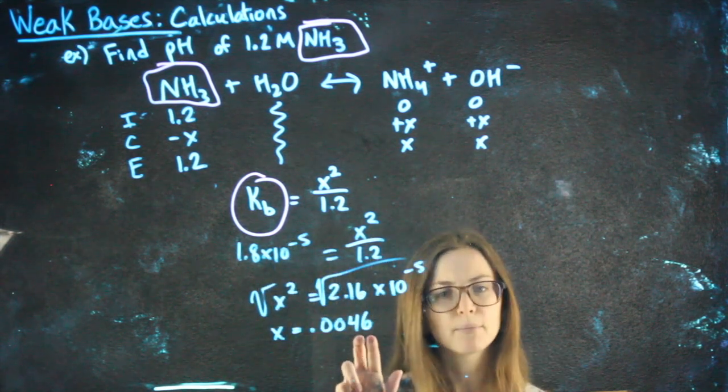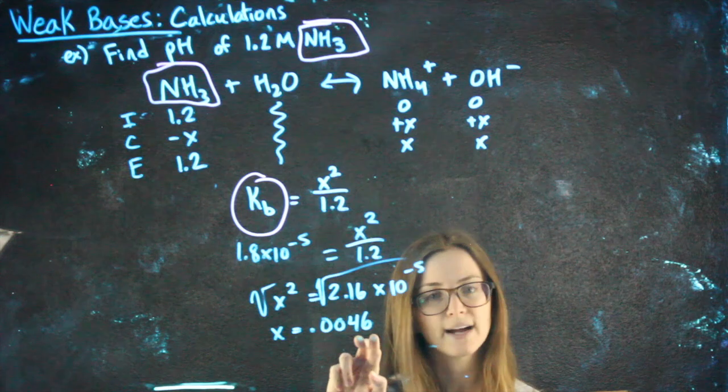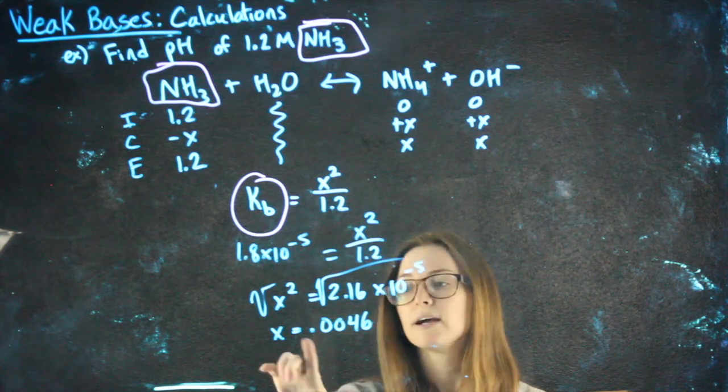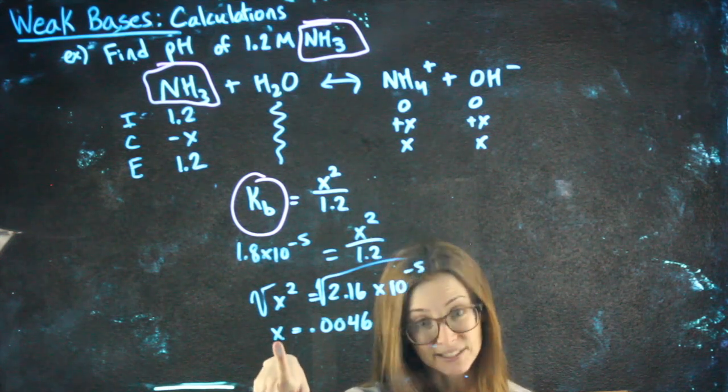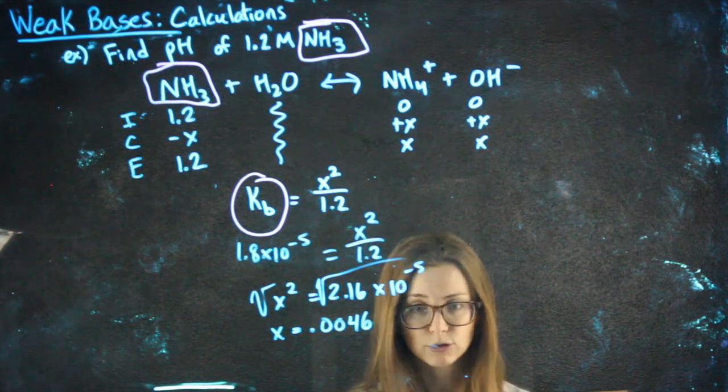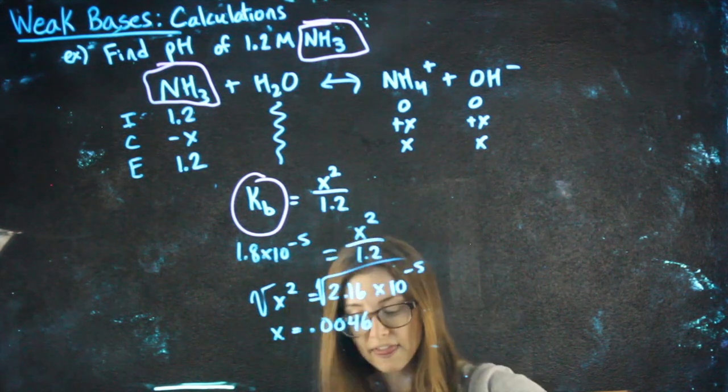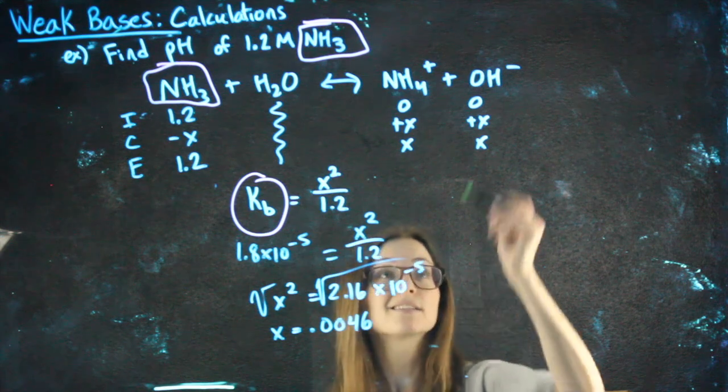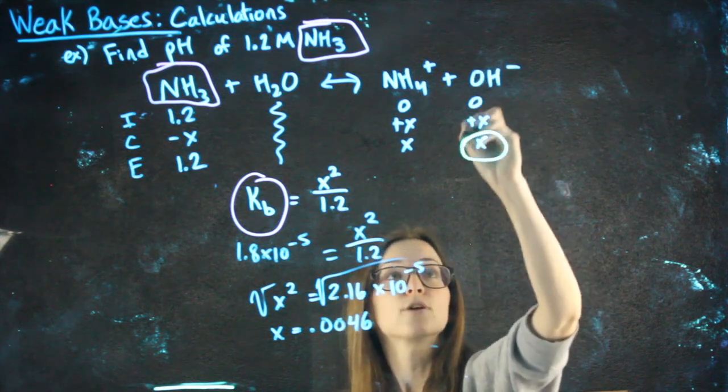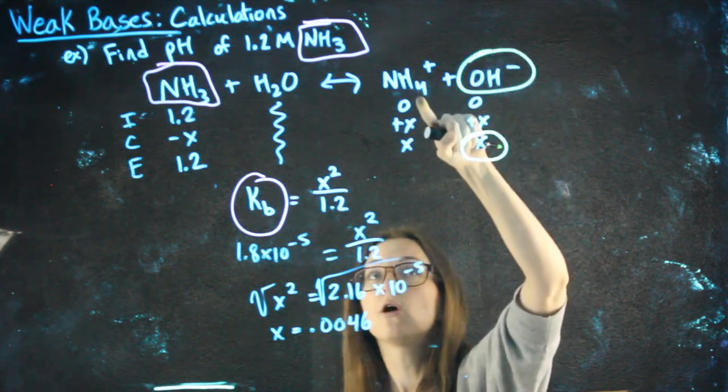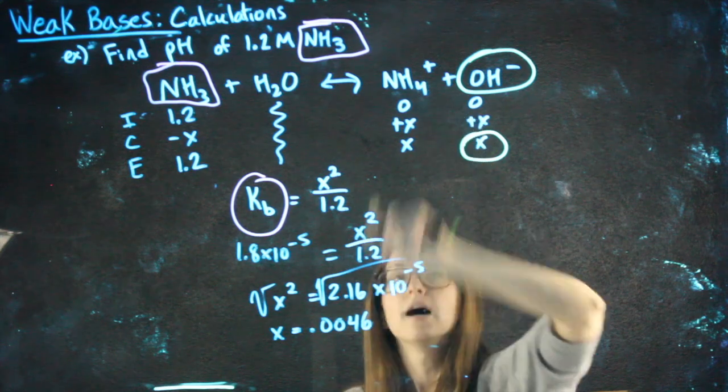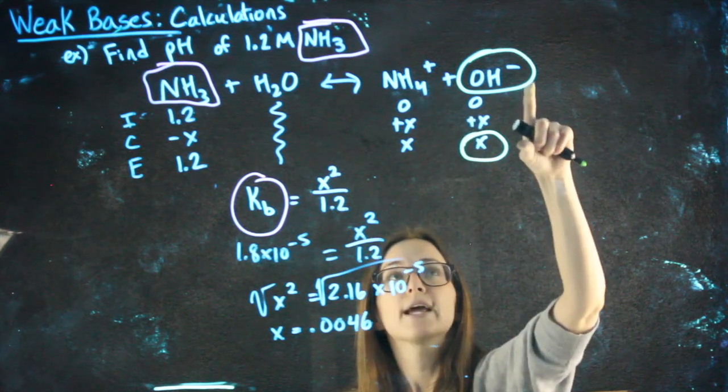You'll want to give 2 or 3 numbers that aren't 0 after the decimal. Now, x represents something different. Your ICE chart can always remind you what x represents. The thing we care about in this case that x represents is our OH-. We don't really care about NH4+, but we do care about OH-.